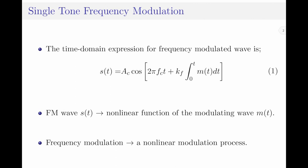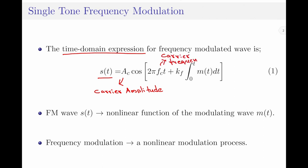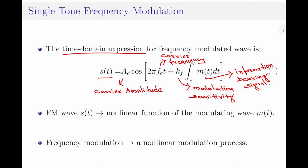Coming to the topic of this discussion, which is single tone frequency modulation, I would like to start by first writing the time domain expression for the frequency modulated signal, which is given by s(t) equals ac into cos of 2π·fc·t plus kf into integral from 0 to t of m(t), where ac represents the carrier amplitude, fc represents the carrier frequency, kf represents the modulation sensitivity constant, and m(t) represents the information bearing signal. By analyzing this equation carefully, we find that the frequency modulated signal s(t) is a non-linear function of the modulating signal m(t). Therefore, frequency modulation itself can be said to be a non-linear modulation process.